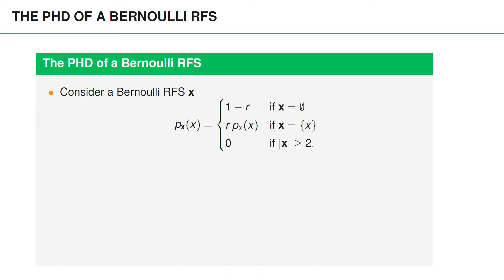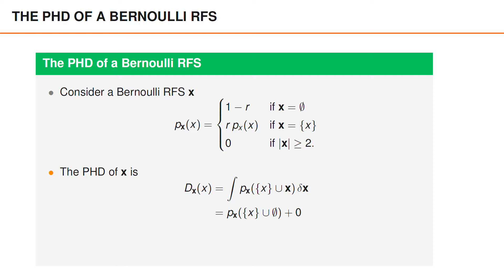It's also interesting to study the PHD for some of the random finite sets we are already familiar with. Suppose we have a Bernoulli random finite set with existence probability r and spatial PDF p_x of x. Using the second expression for the PHD — the set integral over the multi-object PDF of the union of the set boldface x and a set with the vector x — we note that the only non-zero term is when the set boldface x is empty, since the multi-object PDF is 0 for cardinalities greater than 1. Evaluating the Bernoulli PDF for a set that contains the vector x gives us r times p_x of x. We therefore conclude that the PHD of a Bernoulli random finite set is the existence probability r times the spatial PDF p_x of x.